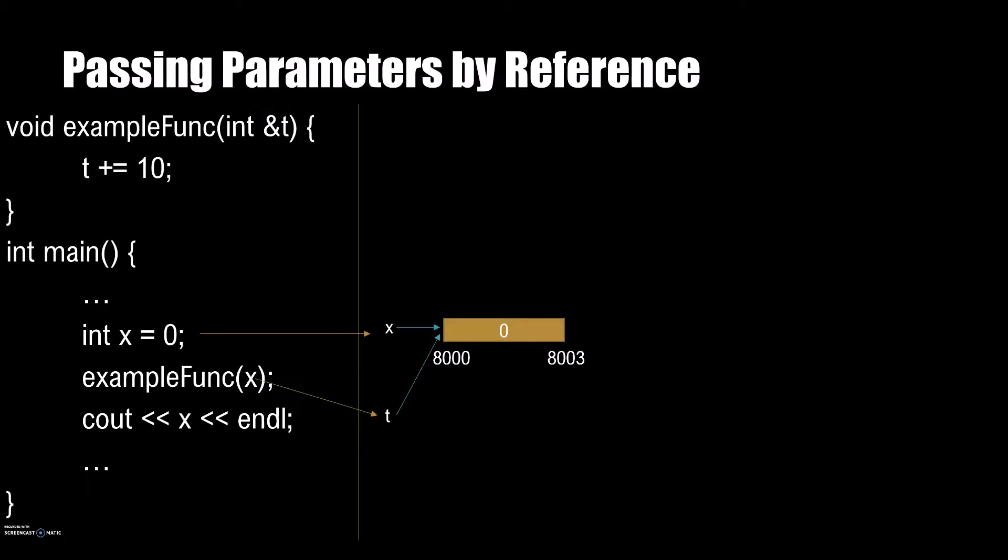So why might we want to pass variables by reference to a function? Consider that we might have a large, complex function that gets passed many parameters. In this function, what if we want to change the value of a parameter so that it is also changed for the code that called the function? Passing parameters by reference allows an easy way to modify state in this case.